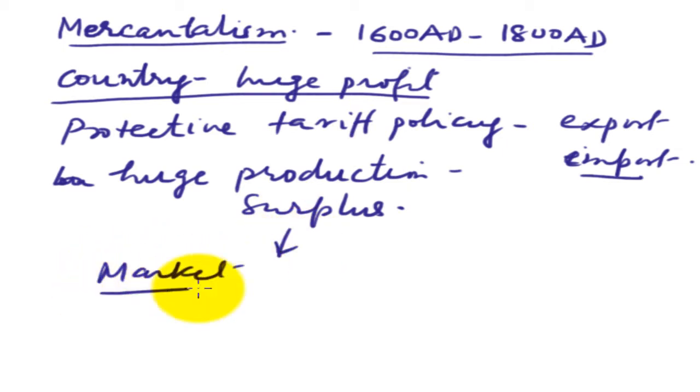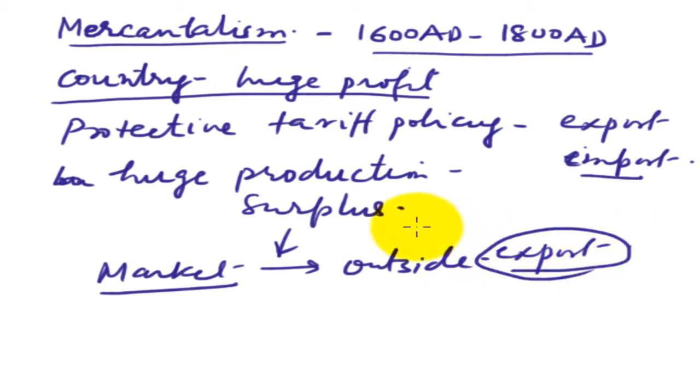If surplus is generated, the surplus required to be sold in the market. Because it is surplus, it is not consumed in the local market. So it has to go to the outside. As it is going to the outside, it is known as export. The government is supporting the export because the surplus should be sold. Otherwise, they will be lost to the state. And in this way, the profitability will be there.